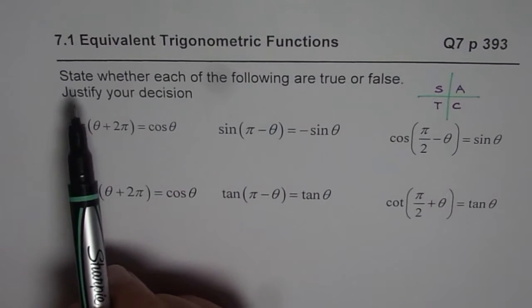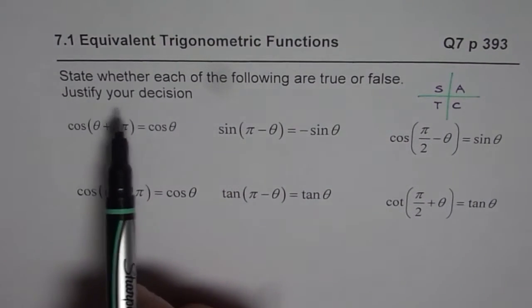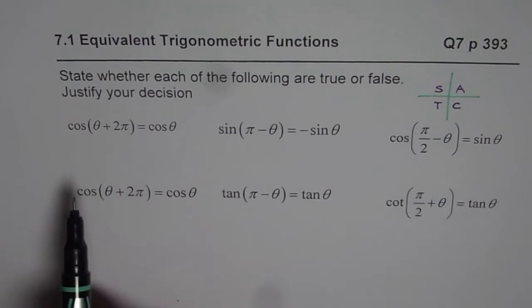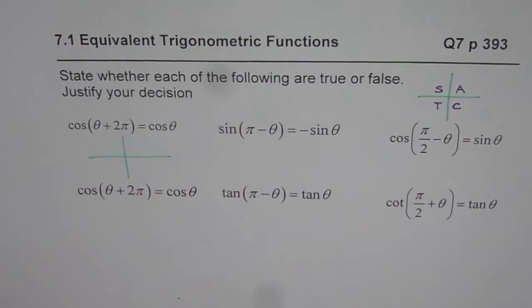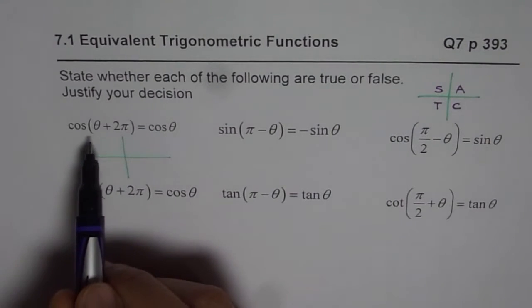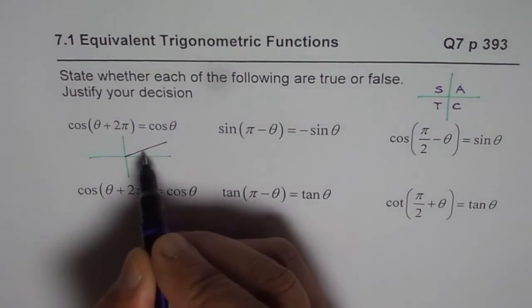The question here is state whether each of the following are true or false, justify your decision. So I've taken six of these and let us see whether they are true or false, and that will help you to also understand the concept. Now what we will assume is that theta is some acute angle.